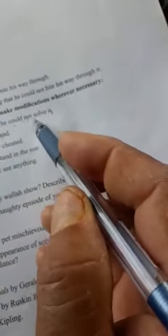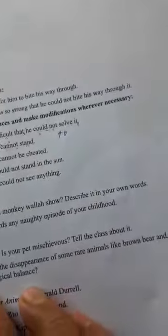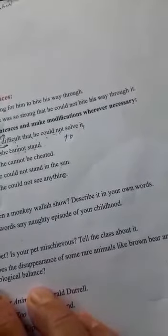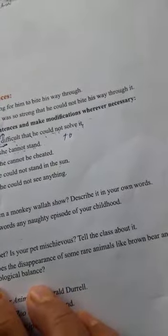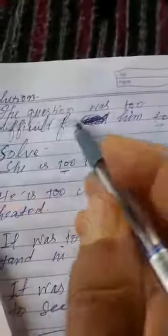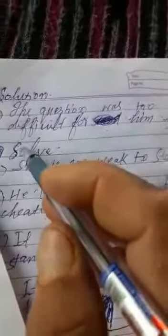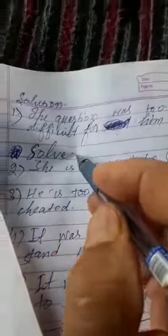Could not solve کی جگہ ہم لگیں گے to. خالی لکھیں گے to. کیا بنا اس میں? The question was too difficult for him to solve. یہ ہو گیا۔